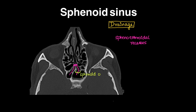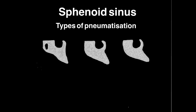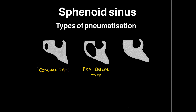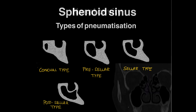We will discuss the types of sphenoid sinuses based on pneumatization. There is the conchal type, then the pre-sellar type — anterior to the pituitary fossa. The sellar type involves the sellar part of the bone. And the last is the post-sellar type, extending up to the dorsum sellae.